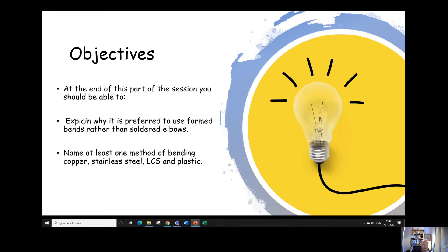And name at least one method of bending copper, steel, low carbon steel and plastic. And I also want you to be able to state the formula that's used for calculating the length of a bend and actually be able to implement that formula, be able to use that formula and calculate the length of bends and overall length of the pipe.